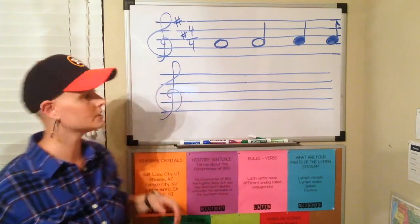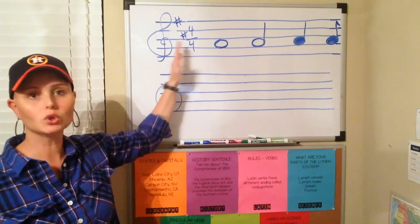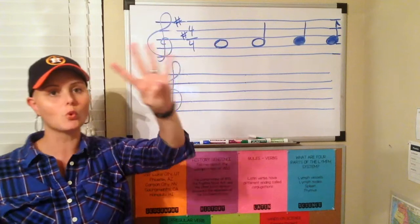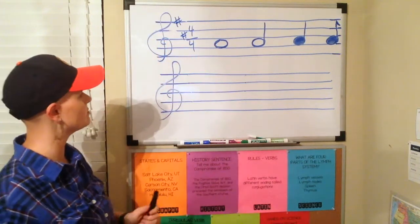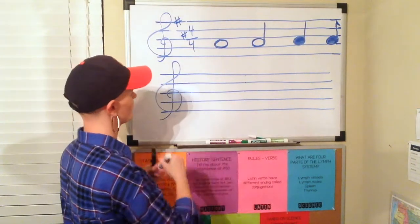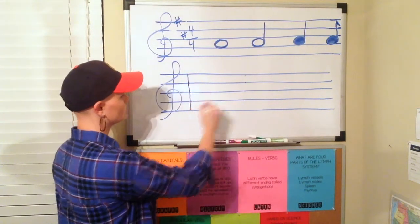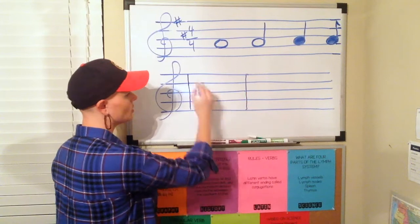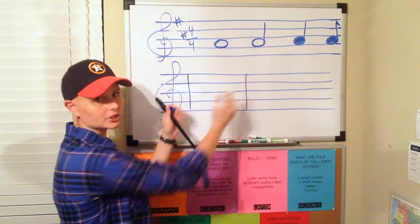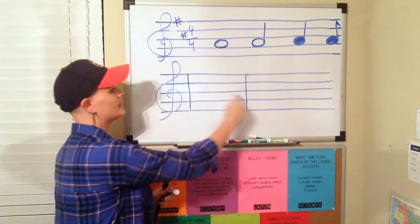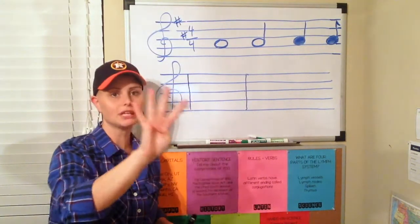Our time signature for the six weeks is four-four time. And all you need to remember by that is there are four beats for every measure. And if you'll remember, a measure is where we draw two straight lines and then all the notes that are inside of this compile our measure.